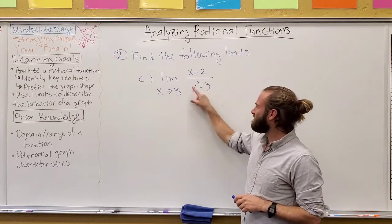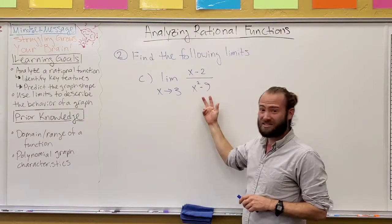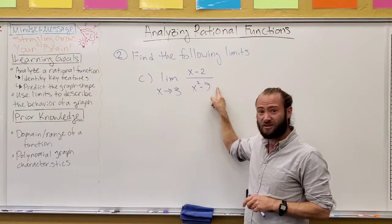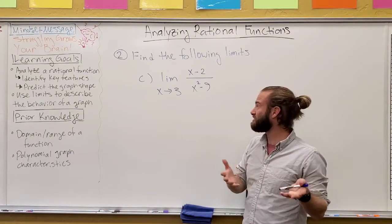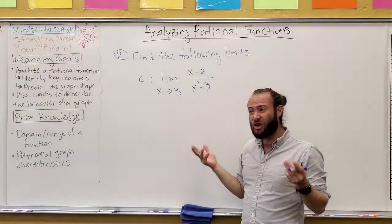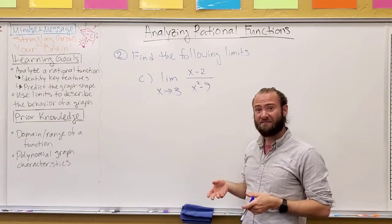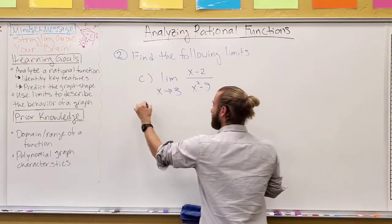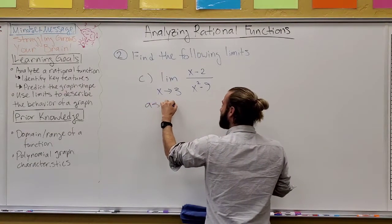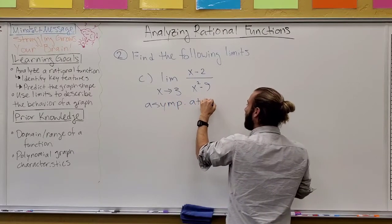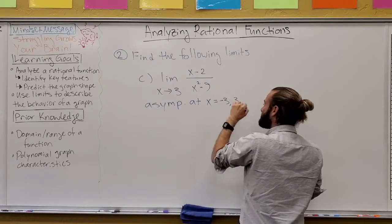Well, we know that f of x isn't going to cancel anything in top and bottom anymore because this factors to x plus three times x minus three. And we already know as well, based on the graph, that this has two asymptotes. So,